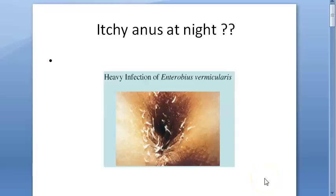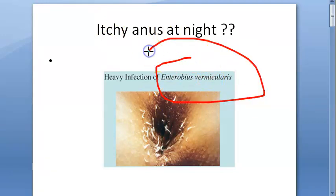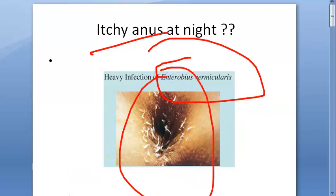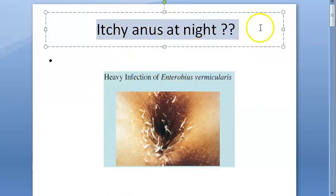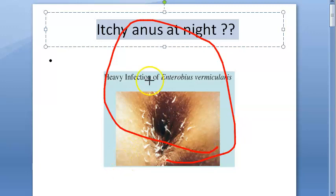Hello, in this video we want to look at Enterobius vermicularis. Before we begin, here's the key introduction: if there is an itchy anus at night — if the person's anus itches only at night — it can mean that it is an Enterobius vermicularis infection, because the worms are coming out of the anus at night. So that is today's topic: Enterobius vermicularis.